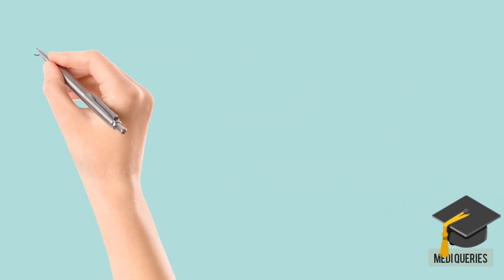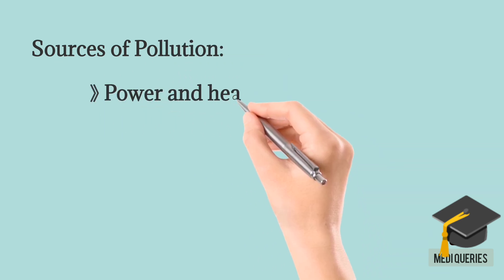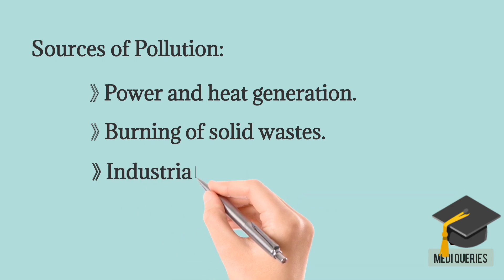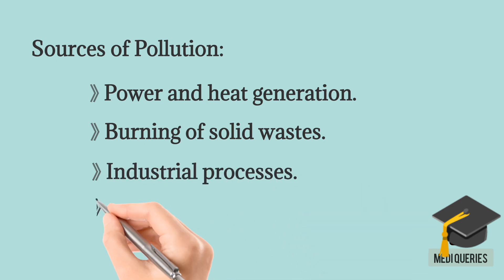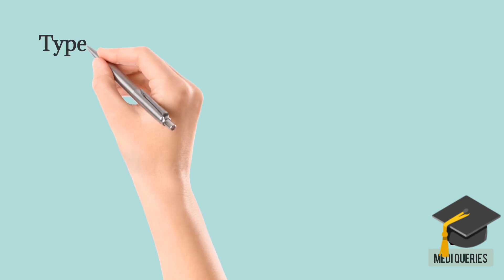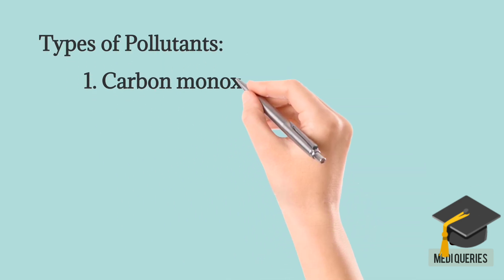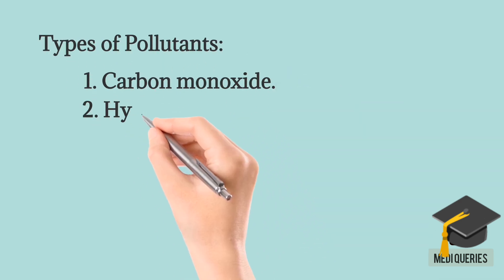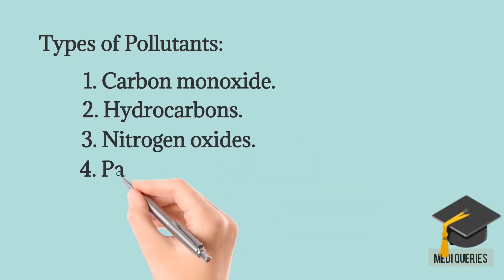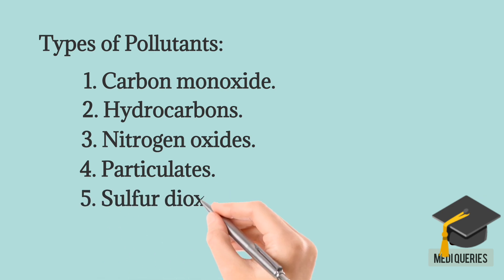Among the major sources of air pollution are power and heat generation, the burning of solid waste, industrial processes, and especially transportation. The six major types of pollutants are Carbon Monoxide, Hydrocarbons, Nitrous Oxides, Particulates, Sulphur Dioxide, and Photochemical Oxidants.